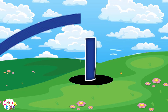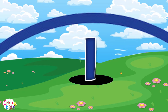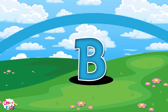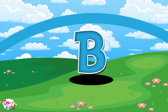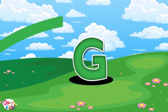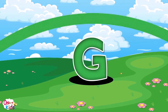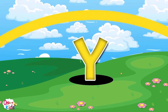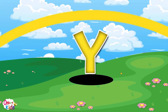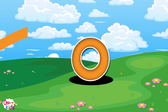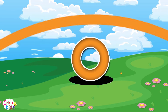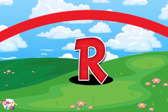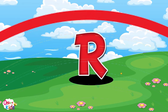I for indigo, B for blue, G for green, Y for yellow, O for orange, and R for red.